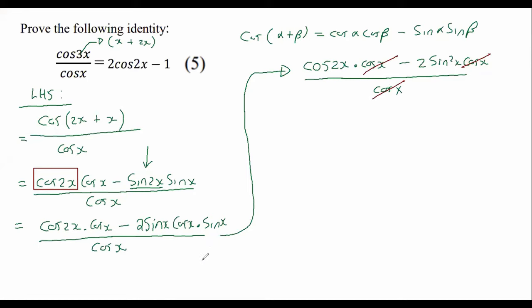If that was confusing for you, then you can imagine at the top, I can take out a cosx as a common factor. If I take out the cosx at the top as a common factor, then I would be left with cos2x minus 2sin²x over cosx. And then these cancel. And so that gives us cos2x minus 2sin²x.